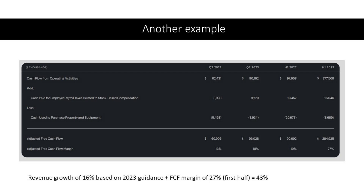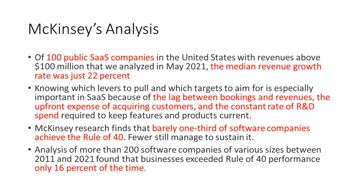McKinsey did an analysis — well worth a read — of 100 public SaaS companies in the US with revenues above $100 million, meaning large growth is behind them. The median revenue growth for those firms was just 22%. So if revenue growth is only 22%, you'd need at least 18% positive free cash flow margin to hit the Rule of 40. McKinsey says knowing which levers to pull is especially important in SaaS because of the lag between bookings and revenues.